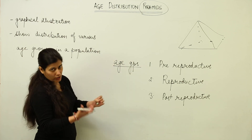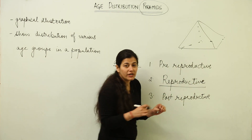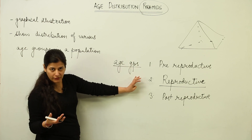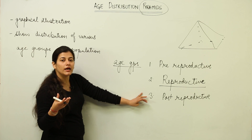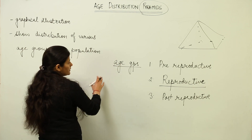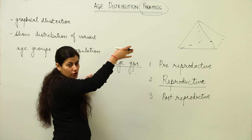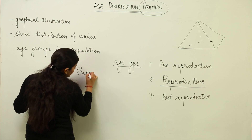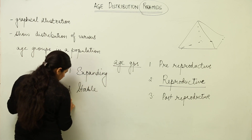When we talk about a growing population — one with a good reproductive population making use of its biotic potential — the graphical representation of the age groups resembles the shape of a pyramid, specifically a triangular shape. We have three types of age distribution representations for a human population.